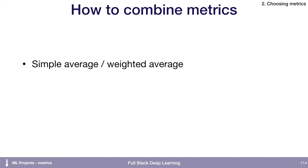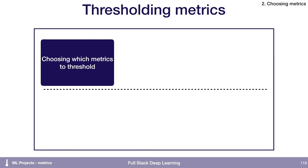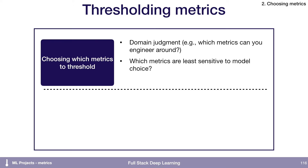Another common strategy is to pick one metric to optimize on and then set threshold levels for the rest. For example, we really care about accuracy, but we need our model to run predictions within a certain amount of time — as long as it meets that threshold, that's fine. How do you choose which ones to threshold and which to optimize? It's domain judgment, but think about which metrics are least sensitive to model choice — optimize those that are more sensitive. Also consider which metrics are already closest to desirable values. If one metric is really bad and two are good, you might threshold the good ones and optimize the bad one.